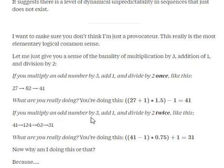If you multiply an odd number by 3, add 1, and divide by 2 twice, like this: 41, 124, 62, 31, what you're really doing is this: you're taking 41, you're subtracting 1, you're multiplying by 0.75, and you're adding 1.